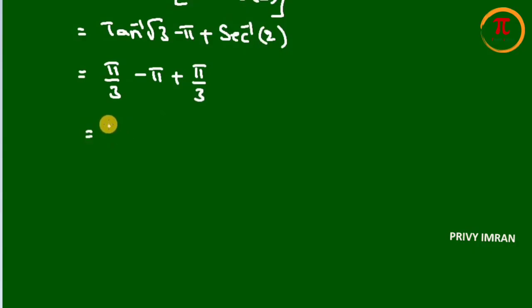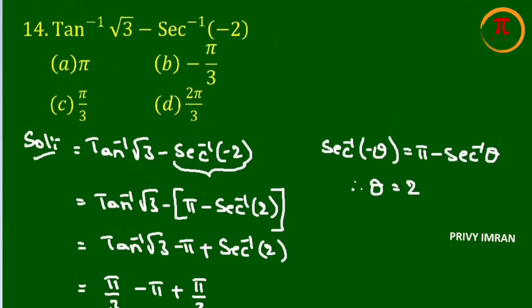Then pi minus 3 pi plus pi whole divided by 3. Here I have taken 3 as LCM. Hence if I simplify this my answer is minus pi by 3. Hence if you observe the options, b is the correct option.